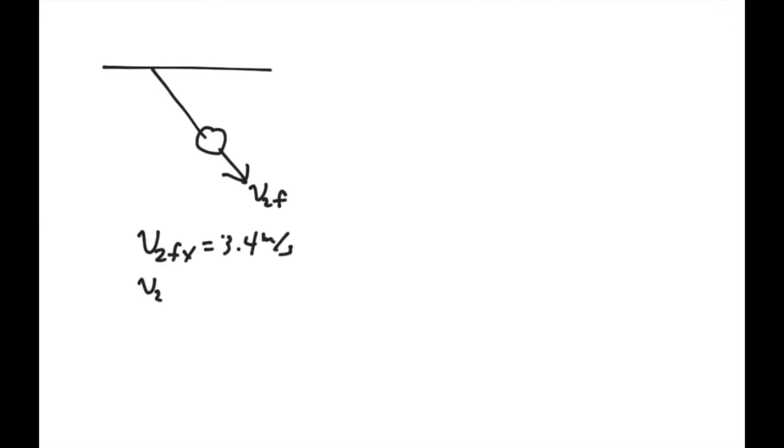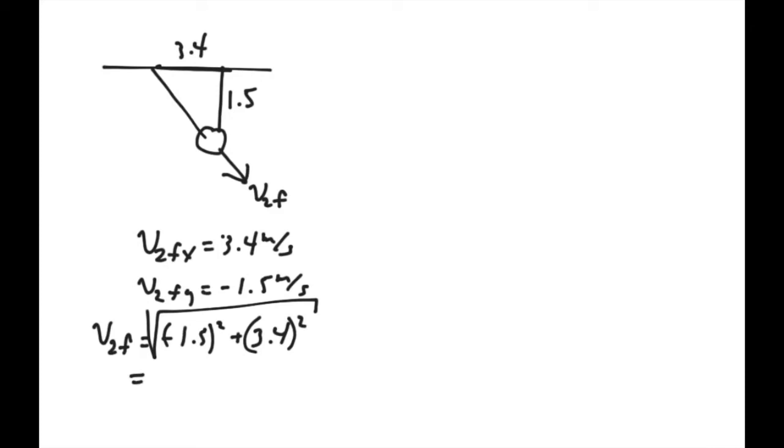The x component is 3.4 meters per second. The y component is a negative 1.5 meters per second. So as we're looking at it here, we've got 3.4 in the x direction, 1.5 in the negative y direction. The total magnitude, v2 final, would then be a negative 1.5 squared plus 3.4 squared square root. And that would be 3.72 meters per second.